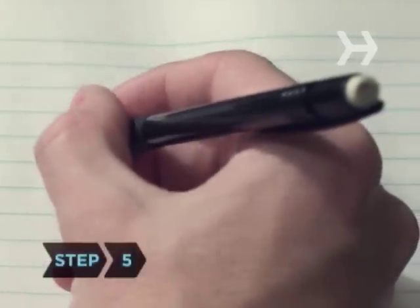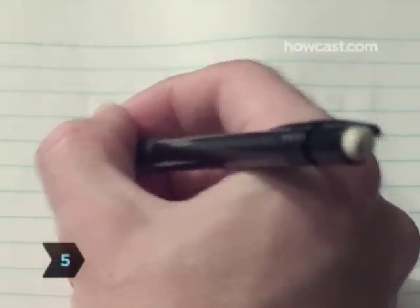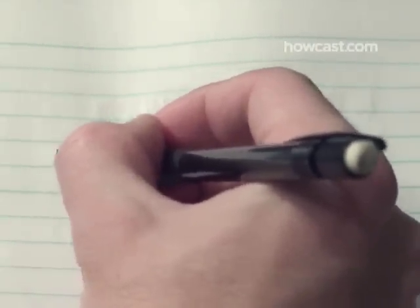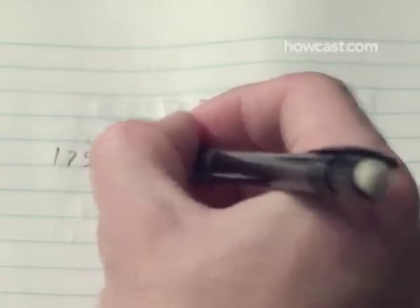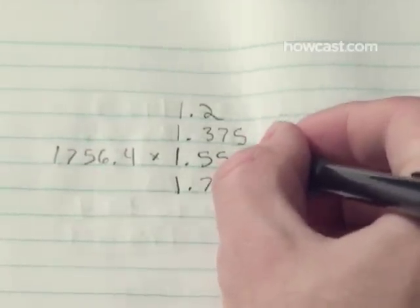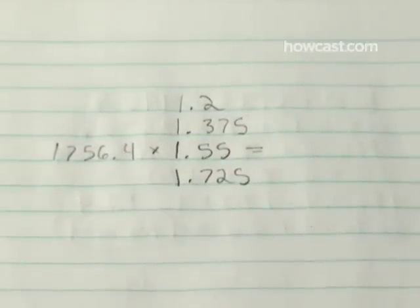Step 5. Multiply your basal metabolic rate by an activity factor of 1.2 for sedentary, 1.375 for light, 1.55 for moderate, and 1.725 for very active.